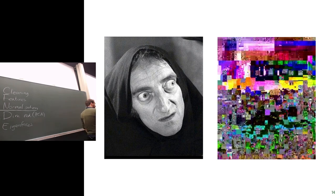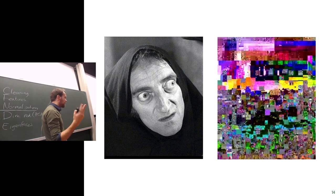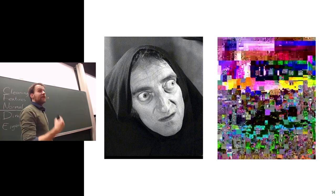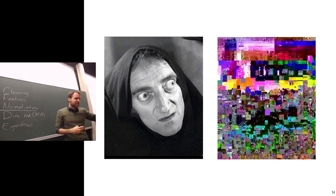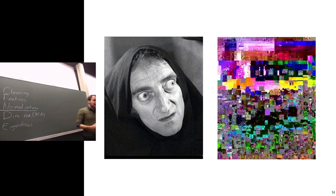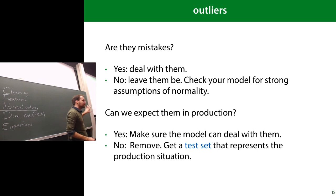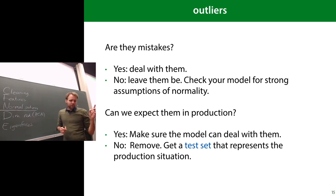Another example is faces. An image that is clearly corrupted — some compression artifact, a bit flipped somewhere — is a mechanical outlier you can discard. But an unusual face, like the comedian Marty Feldman with his distinctive features, is a natural extreme in the distribution of all faces. That's an outlier you want to keep, to ensure your model knows the extremes of face space.